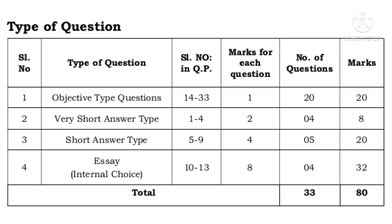First, number one, objective type questions are from question number 14 to 33 and each carries one mark. There are 20 questions, so 20 into 1 is 20 marks. Number two, very short answer type questions are from question number 1 to 4, each carries 2 marks. There are 4 questions, so 4 into 2 marks is 8 marks.